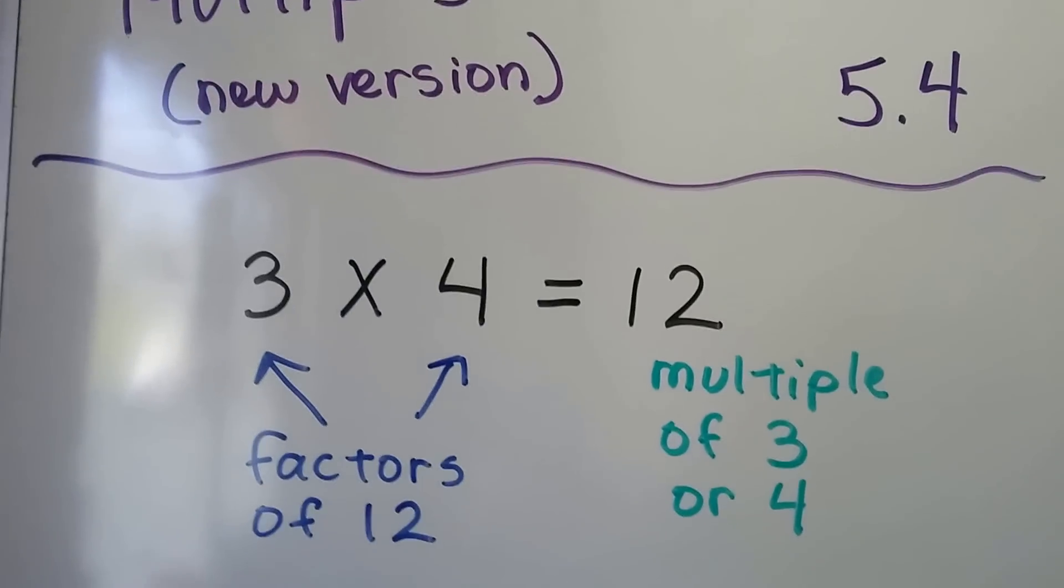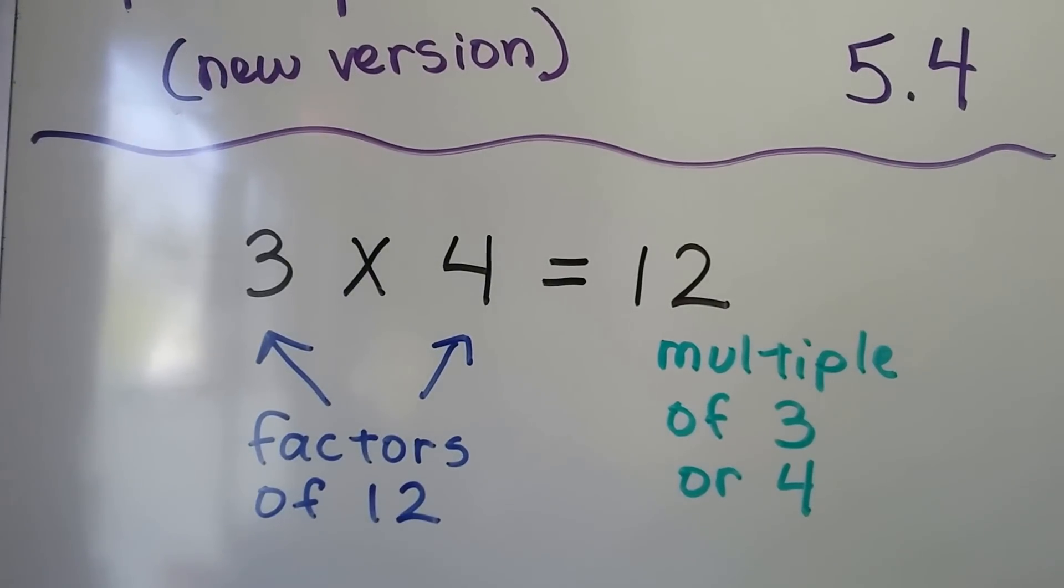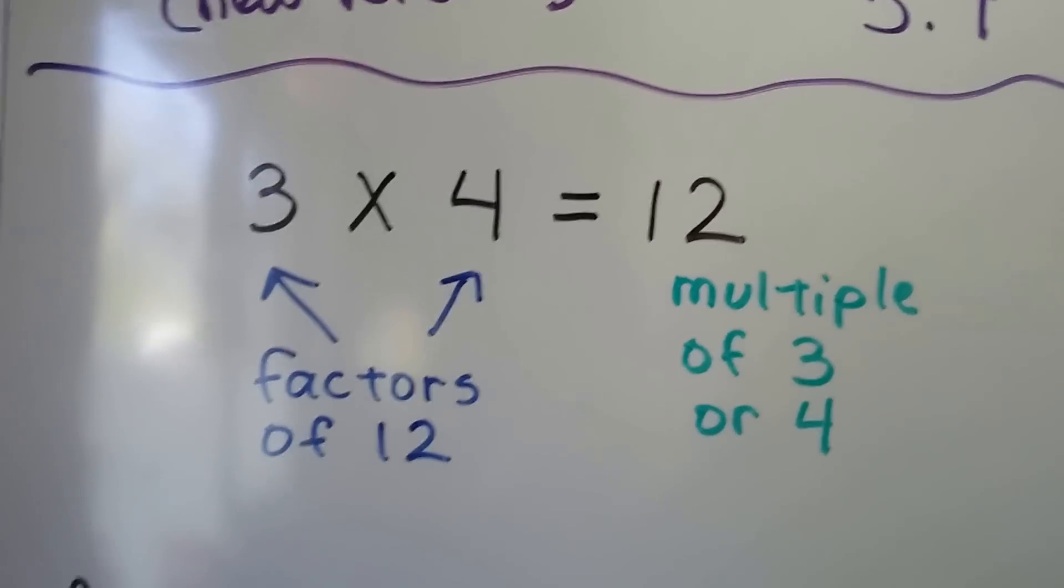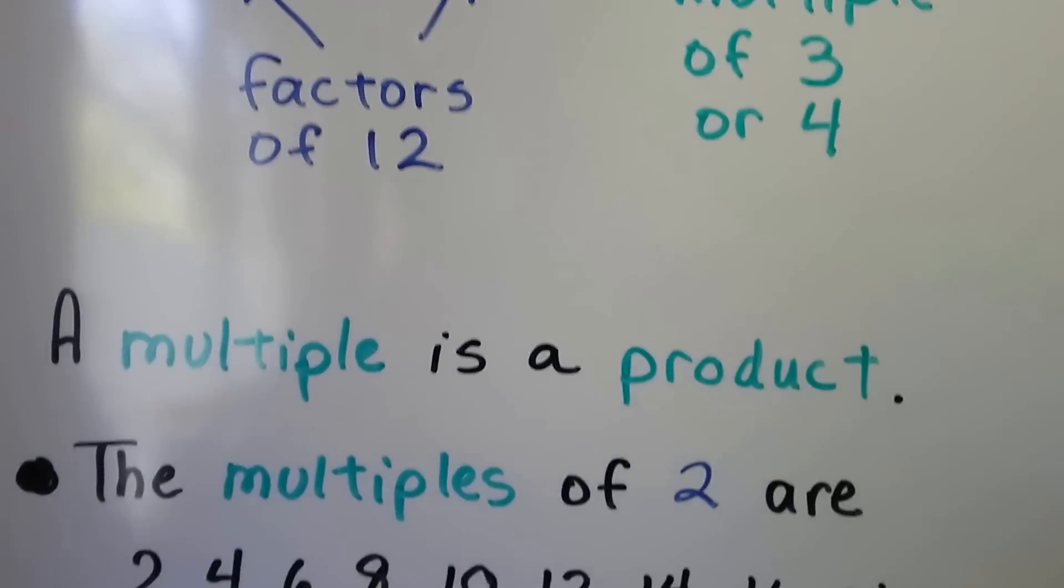We have 3 times 4. Those are factors of 12. 12 is the product. It's a multiple of both 3 or 4. A multiple is a product.